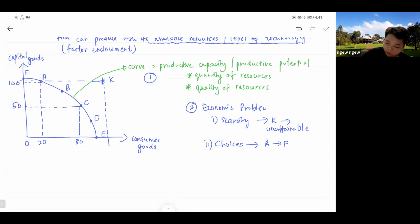And lastly, we all learn after you make choice, it will lead to something called opportunity cost, which is the best alternative giving up. Let's say we give an example. You are now switching from combination A to combination B. As you can see from the diagram, when you are switching from combination A to B, combination A you can produce 100 capital goods with 20 consumer goods.